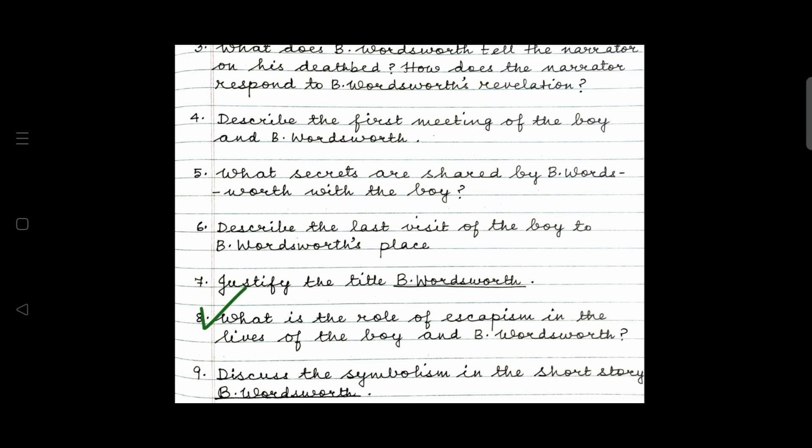Those who are familiar with the romantic poet William Wordsworth will have their curiosity aroused as to what the B before Wordsworth stands for. The name reveals something of the character and therefore the title is appropriate and it is significant. Question eight. What is the role of escapism in the lives of the boy and B. Wordsworth? Discuss the role of escapism in the life of B. Wordsworth. Wordsworth teaches the boy to observe nature, to escape into a world of imagination where he will be able to forget all his worries. He will be able to forget all the harsh realities of life.